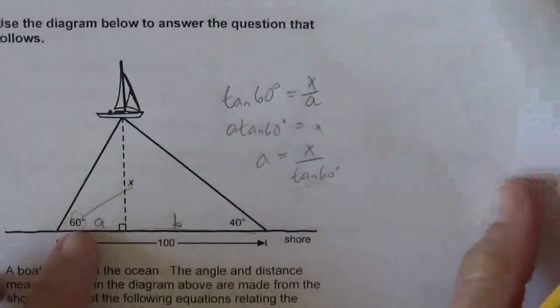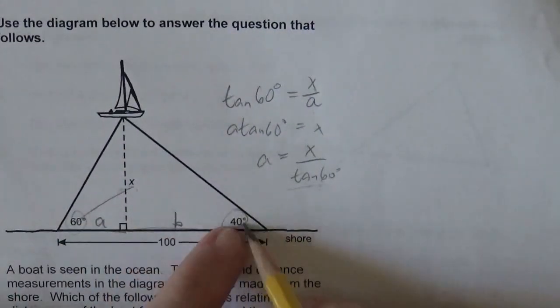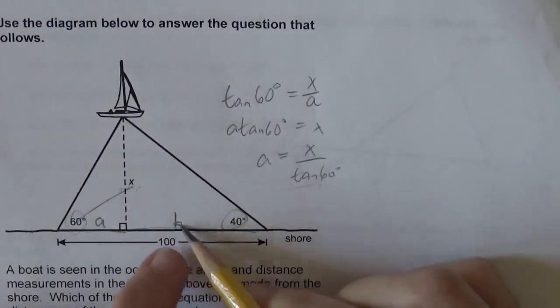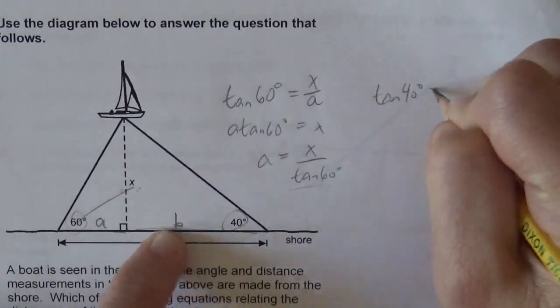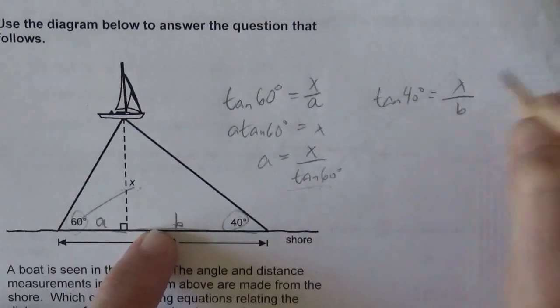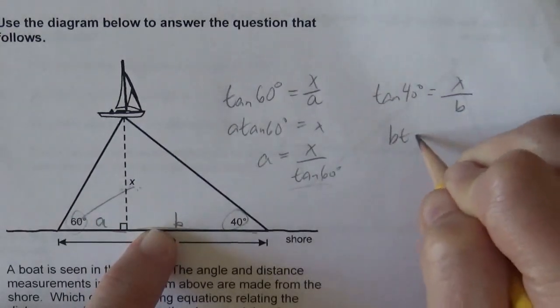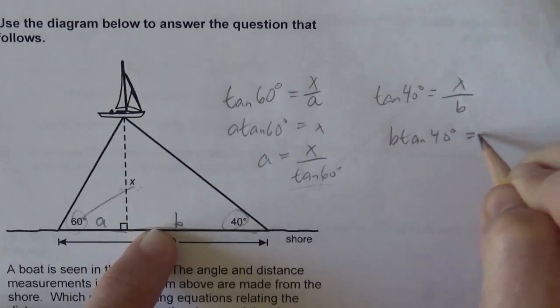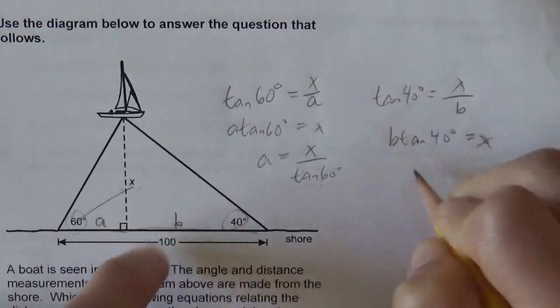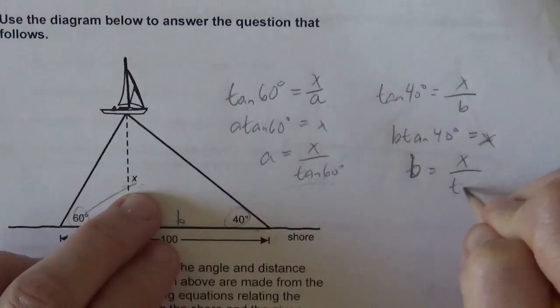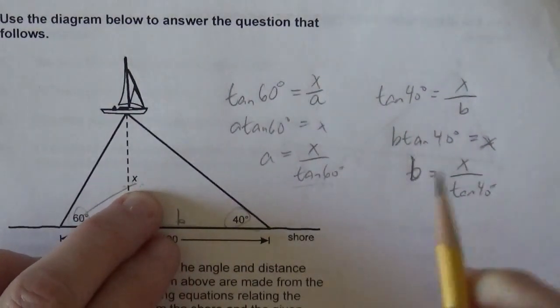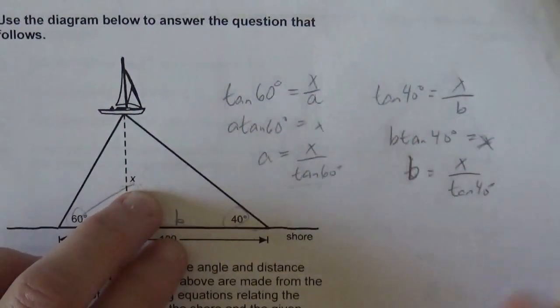And then we do it again for the B, so 40 opposite over adjacent, so the tangent of 40 degrees equals opposite over adjacent. So by the same algebraic manipulations, multiplying by B and dividing by tan 40, B is x divided by tan 40.